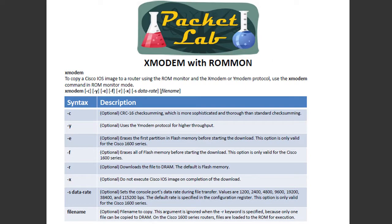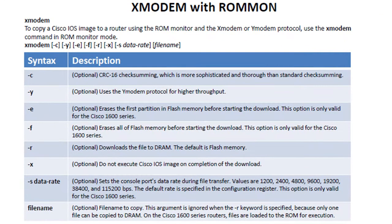Xmodem with ROM mon — this is where I've actually had to use this. If you have Cisco IOS up and running, you generally have the option to do a TFTP transfer from a directly connected laptop. So you wouldn't choose Xmodem. For those who don't know what ROM mon mode is, it's basically when your device cannot successfully load its operating system, its IOS — it goes into a stripped-down version of IOS, analogous to safe mode in Windows, where you have a very limited subset of commands available.